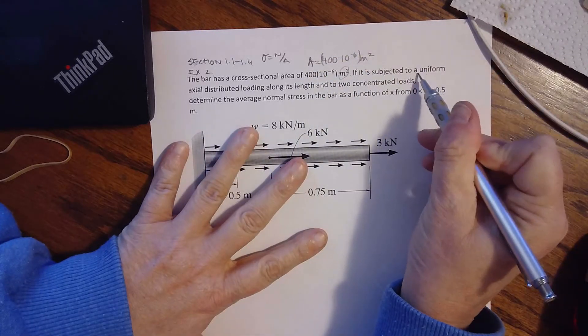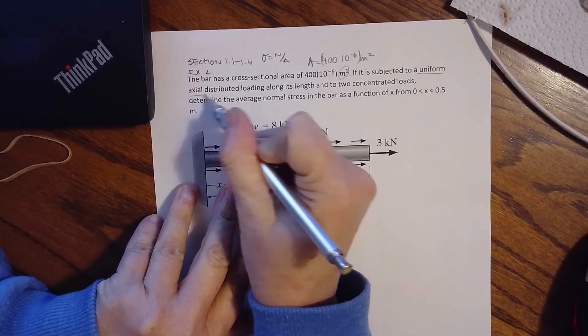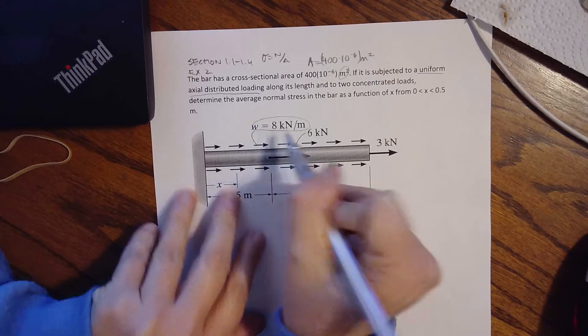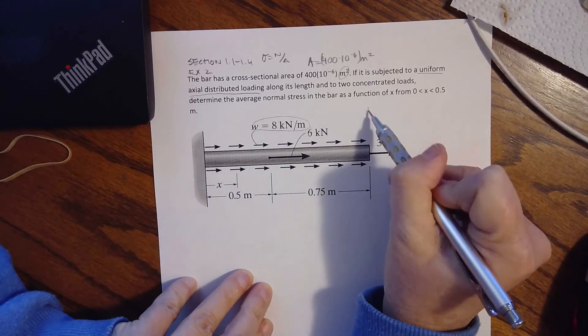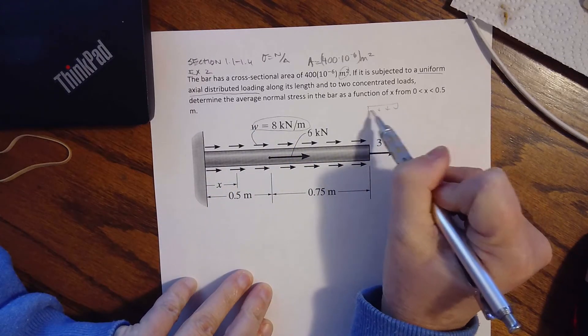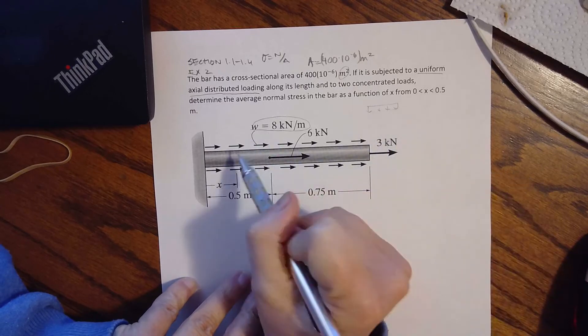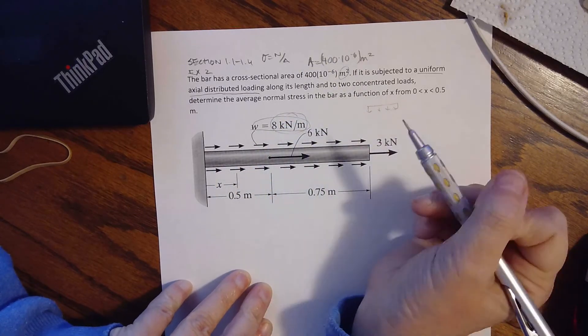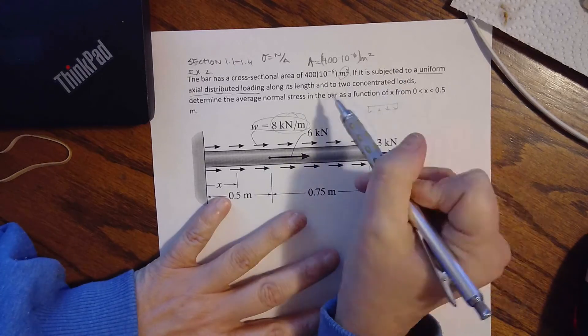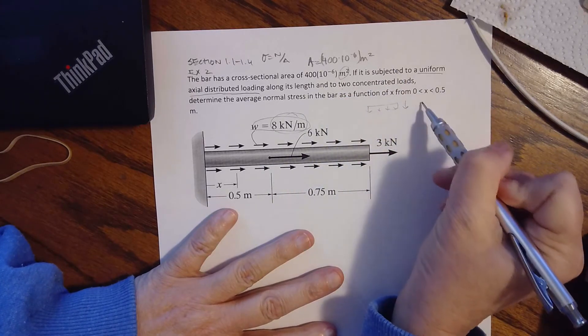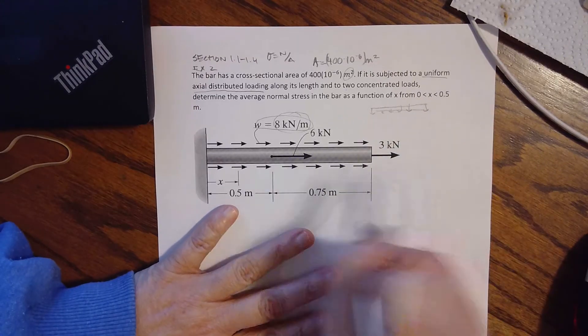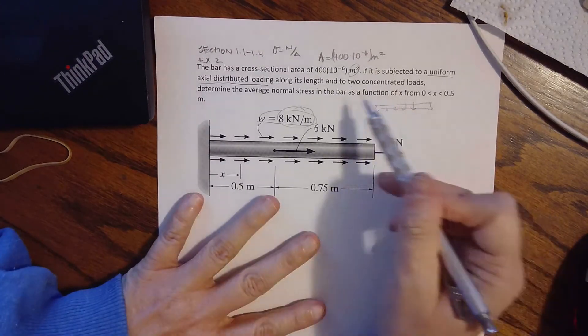It is subjected to a uniform axial distributed load. So it looks just like a load that would be in shear, a uniform load acting down the length. Look at the units. The units help tell me which kind of load we're looking at, and two concentrated loads. So it's just like what we did with beams, except we're now looking at axial loads.